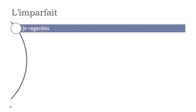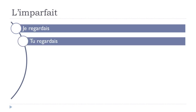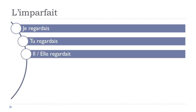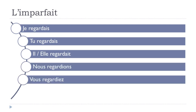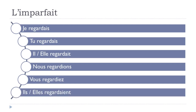Let's see all forms for 'regarder': je regardais, tu regardais, il regardait, elle regardait, nous regardions, vous regardiez, ils regardaient, elles regardaient. Note that regardais, regardais, regardait, and regardaient all sound like 'a'. Nous regardions has the 'yon' sound, and vous regardiez has the 'yé' sound.